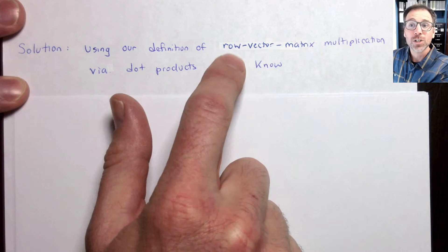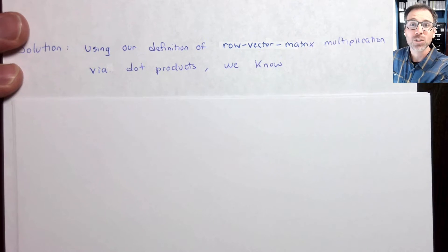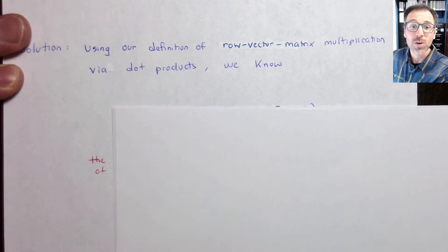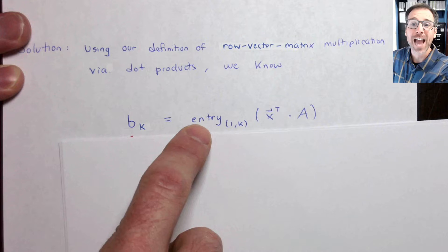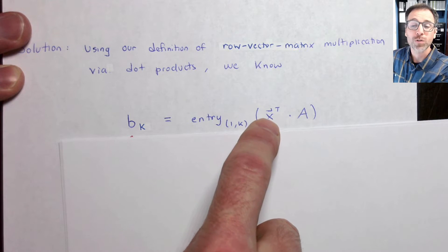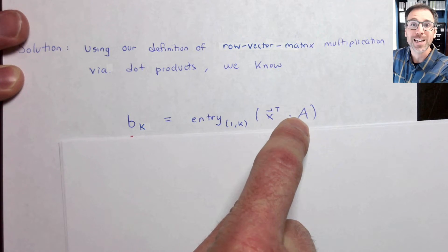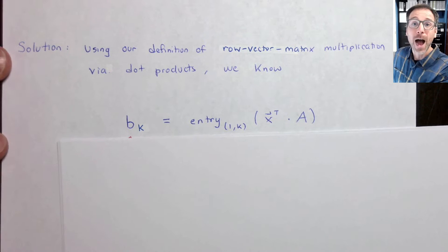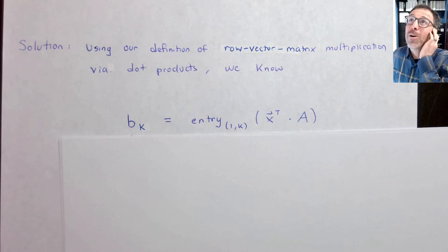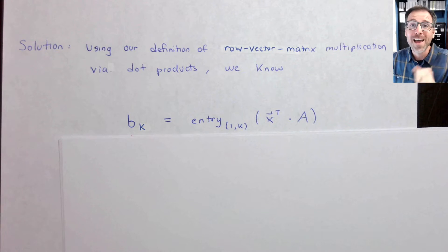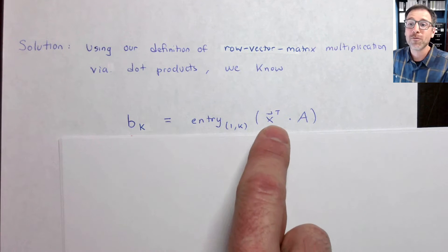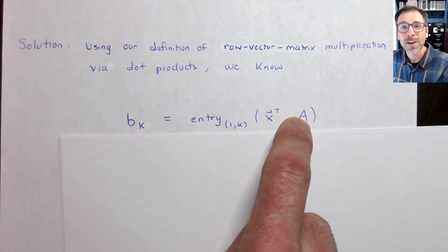Using our definition of row vector matrix multiplication via dot products, we know that, pause the video here, what is the kth entry of the output vector that results from multiplying x transpose times A? Pause it and test yourself. I'm going to do that here. I remember that the kth entry, the entry in row 1 column k, is going to be the dot product between the vector x and the kth column of A.